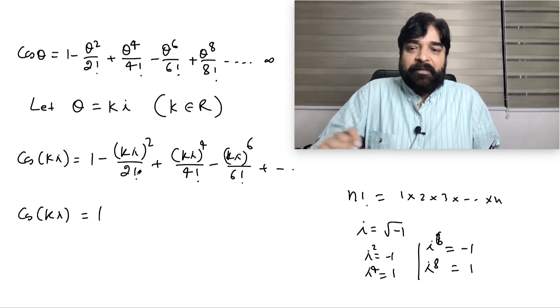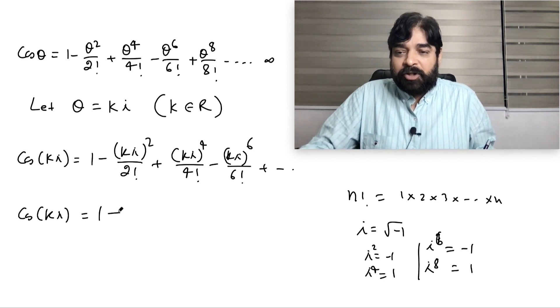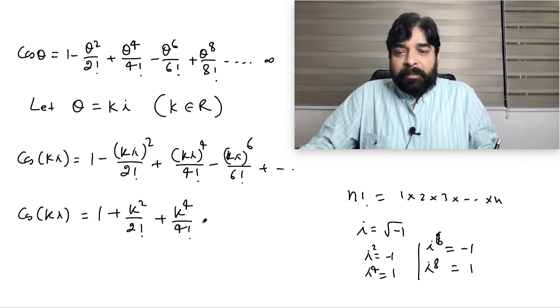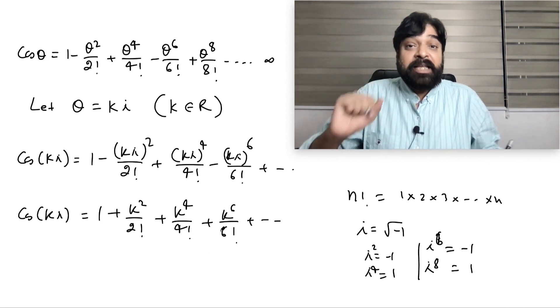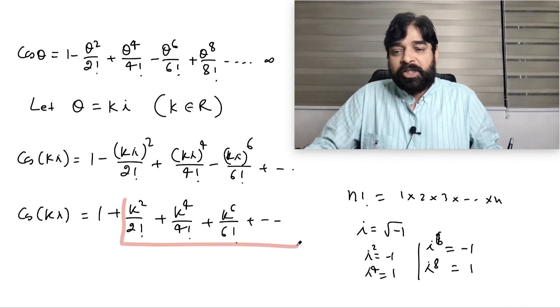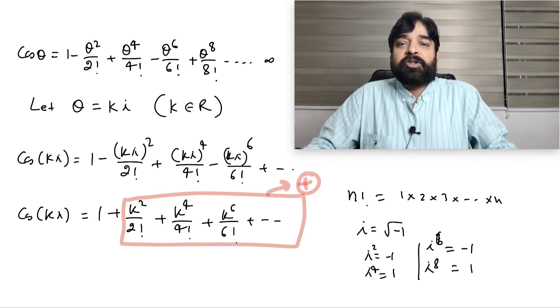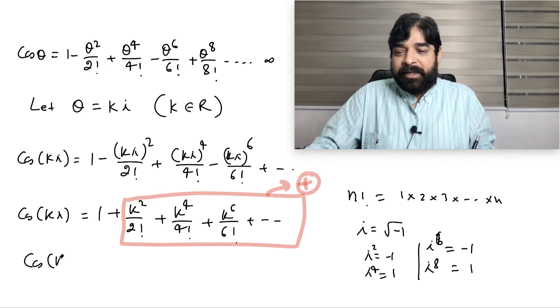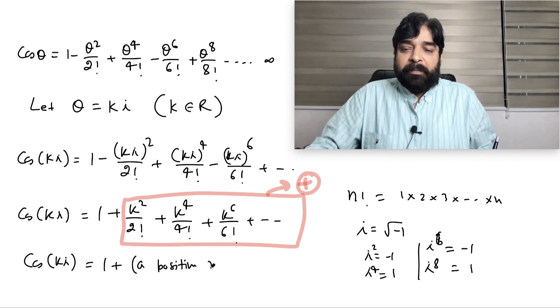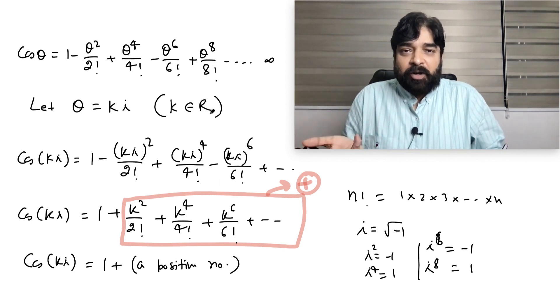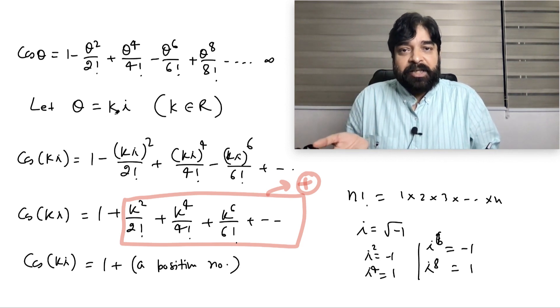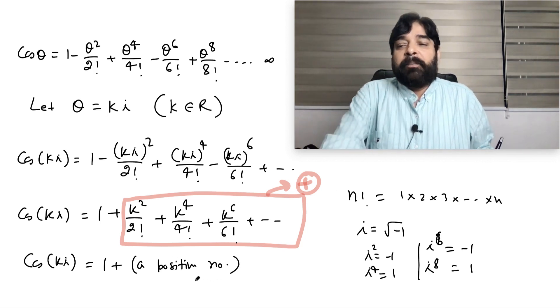I hope this basic i value you know. Though i² is minus 1, this will become plus k² / 2! plus k⁴ / 4! plus k⁶ / 6!, because i⁶ will be minus 1 times minus. Now k is the pure real number, so 100 percent sure this quantity is a positive quantity. That means cos(ki) will be 1 plus a positive number.